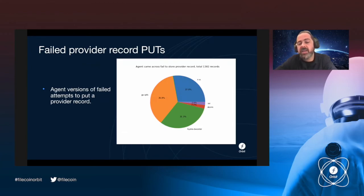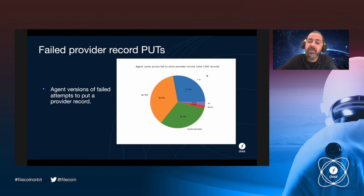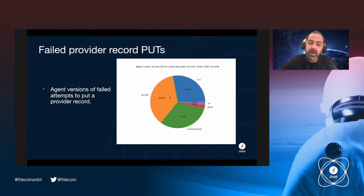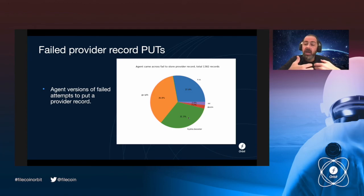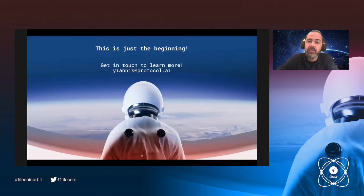We also dug deeper into provider records where the put operation is failing, to figure out why and which agent versions are causing this. Out of about 1,300 record push attempts, we see failures attributed to about 36% on go-ipfs nodes, 31% on hydra booster nodes, and so on. This gives us very good insight for debugging what is going on and improving the performance of the network.